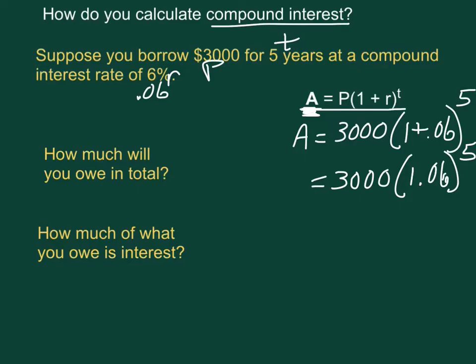Now you're going to need a calculator for this unless it's just a simple square. So I would say you want to do this exponentiation first and then multiply by 3,000. On the next slide I'll show you how to do it with a calculator.